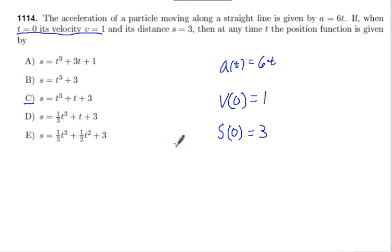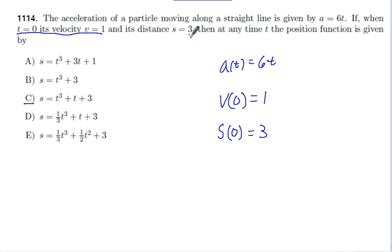I've added a little bit of information here. This information tells us that when t equals 0, the velocity is equal to 1, giving us v(0) = 1. It also tells us that when t equals 0, the distance is 3, so s(0) = 3. We start off with acceleration and we want to get to the position function.